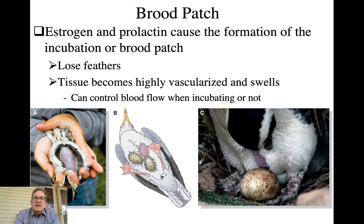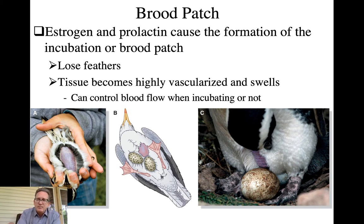Prolactin and estrogen increases cause the formation of what's called an incubation patch or brood patch. This involves loss of feathers on the breast and belly, and the tissues in these areas become highly vascularized — greatly increased blood flow — and swell with fluid. It's amazingly hot; it feels like a heating pad. If you catch a bird with a big brood patch, you can literally feel the heat radiating off it. This is an adaptation to increase the efficiency of transferring heat from the body to the eggs.